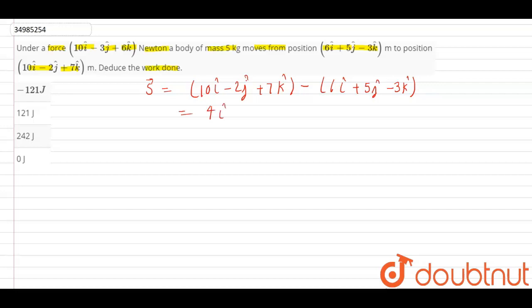4 i cap minus 7 j cap plus 10 k cap. So, work done equals to f dot s.